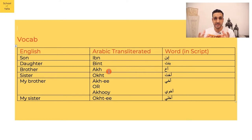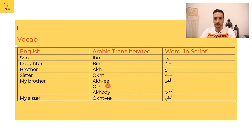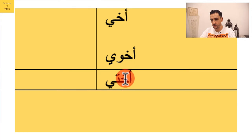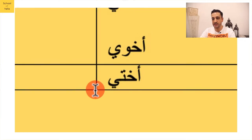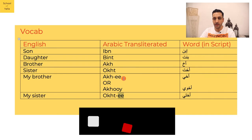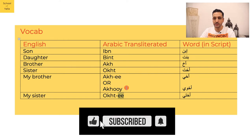To add possession — to say 'my' — in Arabic this is done with a suffix. We add the 'i' sound, which in Arabic script is the ya. So for example, 'ukhti' means 'my sister.' That's just 'ukht' plus the 'i' suffix: ukhti.